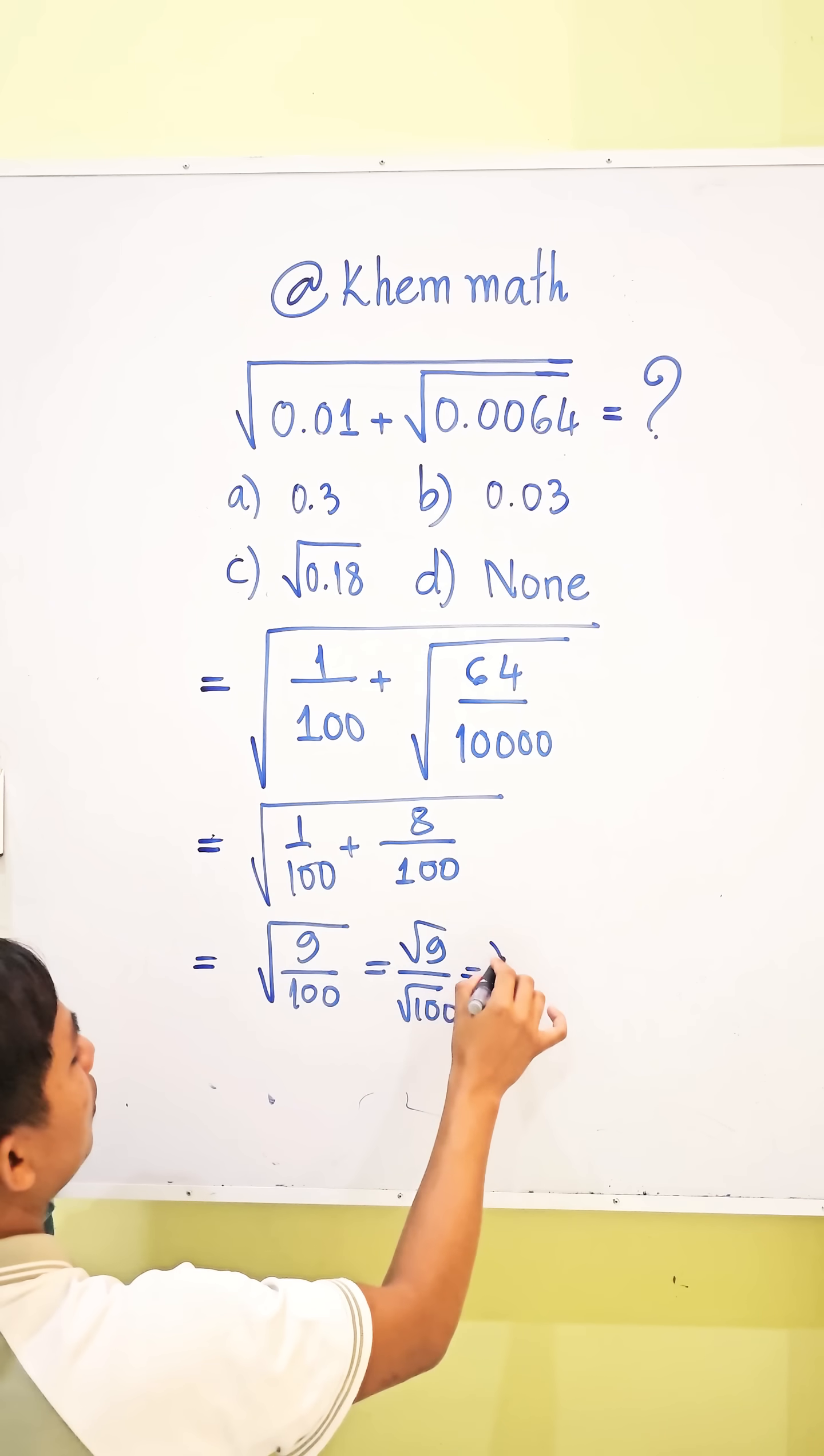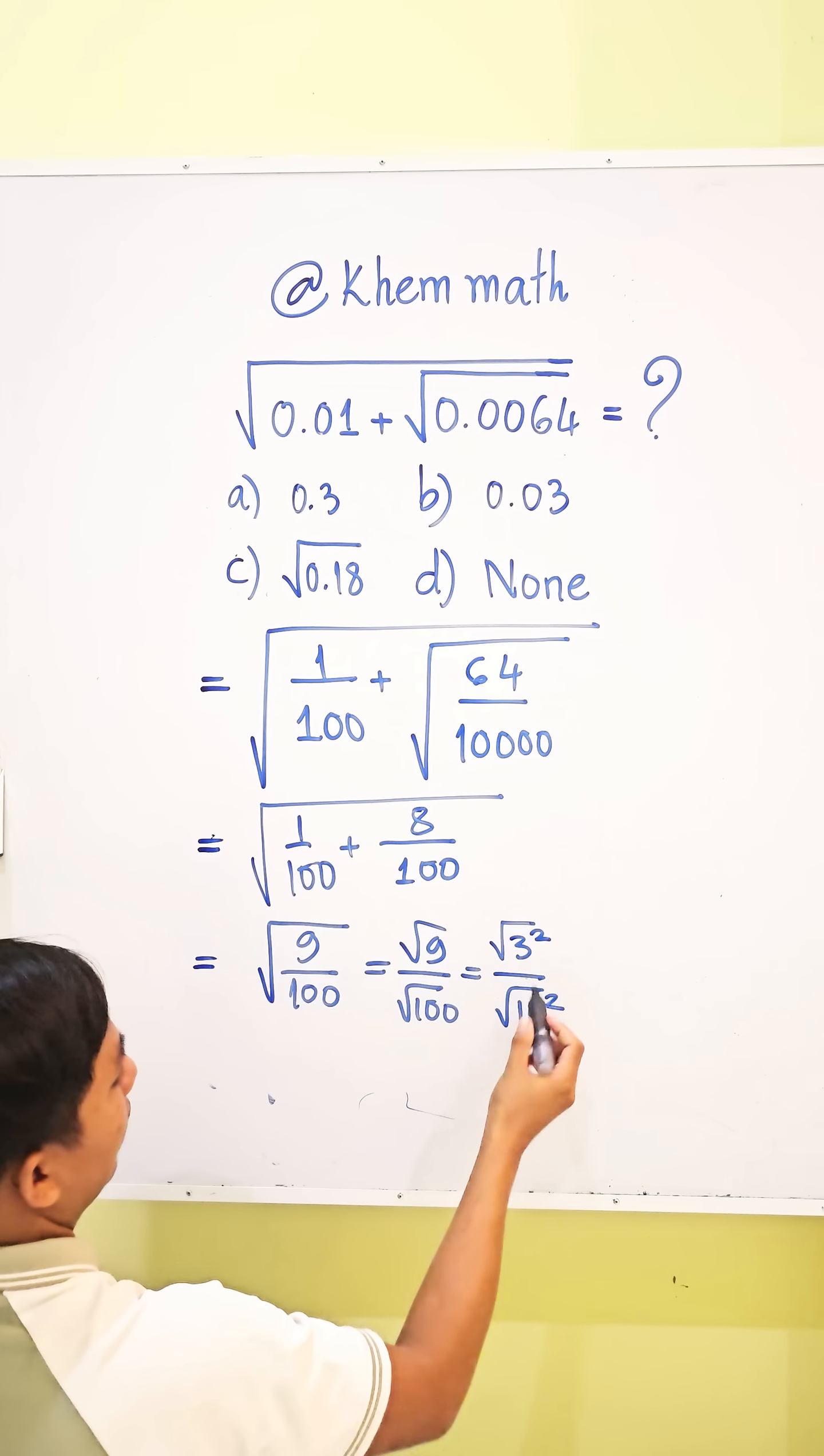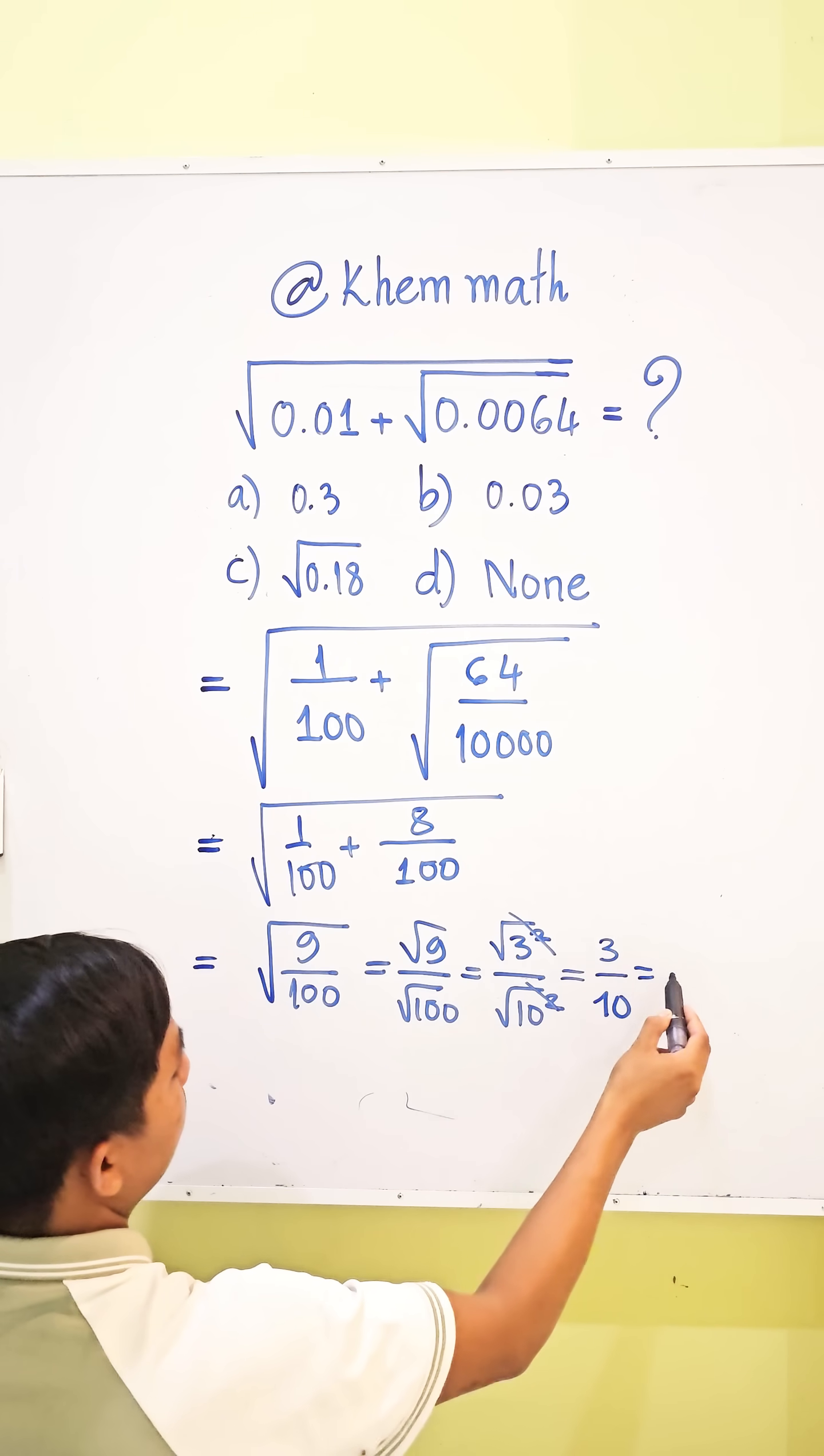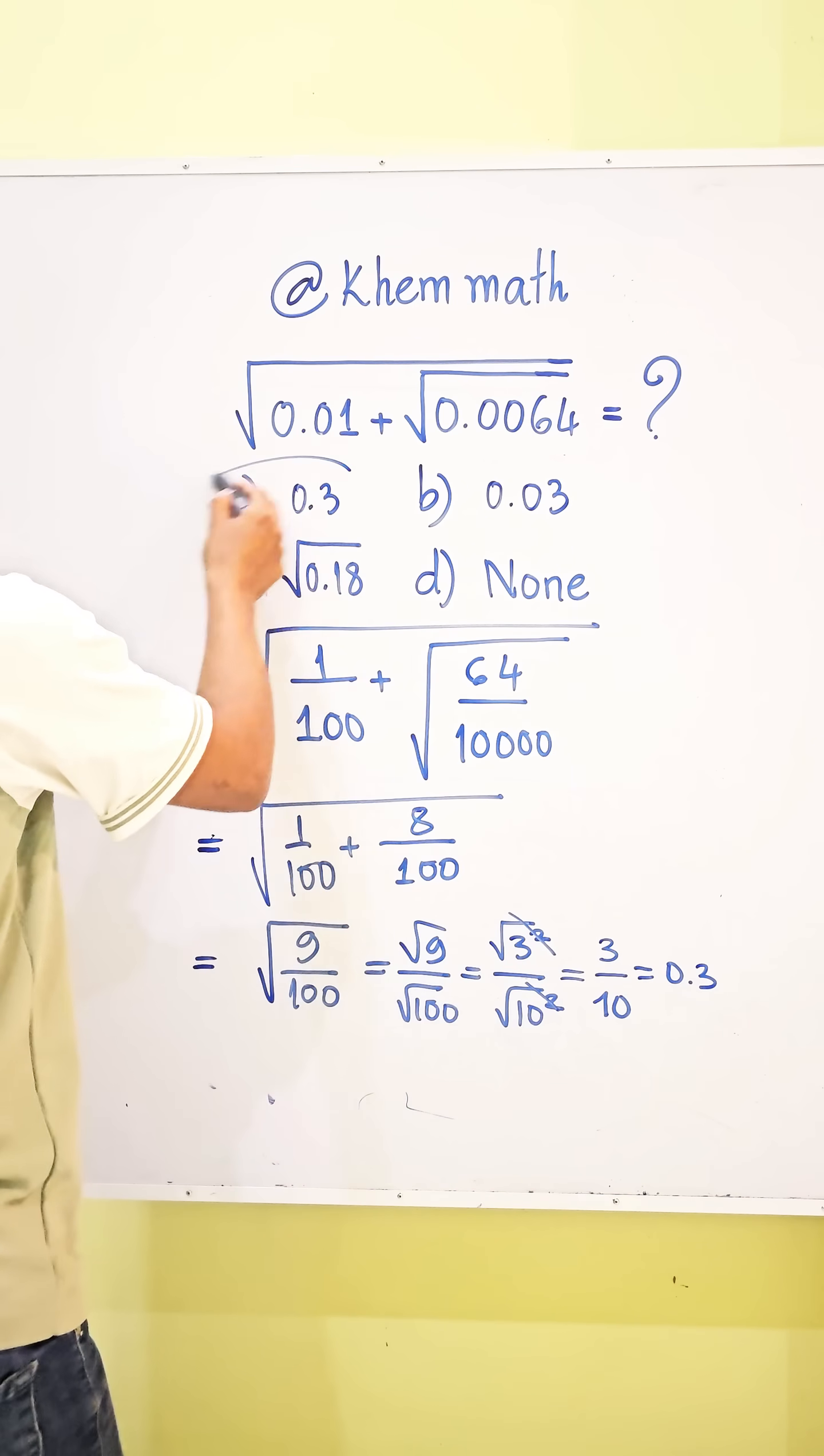This equals square root of 3 squared divided by square root of 10 squared. We simplify the square root and square to get 3 divided by 10, and 3 divided by 10 equals 0.3. So our answer is A.